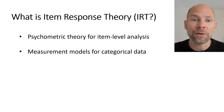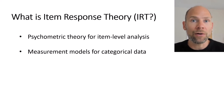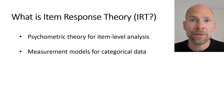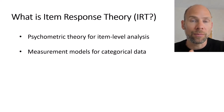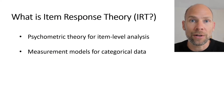Item response theory provides measurement models for outcome variables or response variables that are categorical — typically items that are binary or dichotomous, taking on only two values such as right or wrong, yes or no, or agree/disagree — or that are ordinal in nature. For example, items that are partially correct where you have a score of zero for incorrect, one for partially correct, two for completely correct.